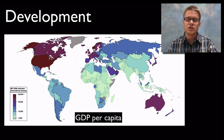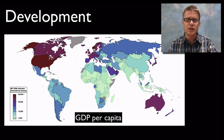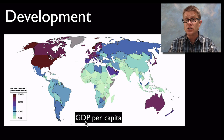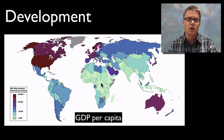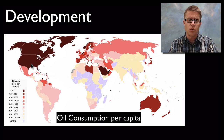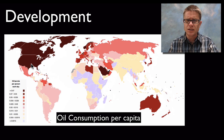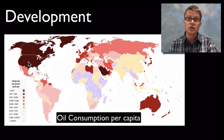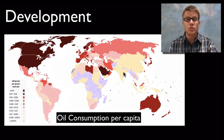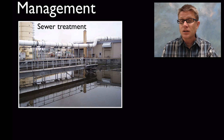Another thing we need to address is this idea of development over time. We have certain countries that are developed and certain countries that are developing. Wealthy nations like the United States have a high GDP per capita. In a lot of countries in Africa we're going to have lower wealth. If you are a wealthy nation you're going to be consuming more natural resources. This map of oil consumption per capita almost looks identical to the wealth map — the United States is consuming a lot of that oil, increasing the amount of fossil fuels we put into the atmosphere. But other countries like China and India are becoming developed too, and with far more people, that's going to put more stress on our planet.